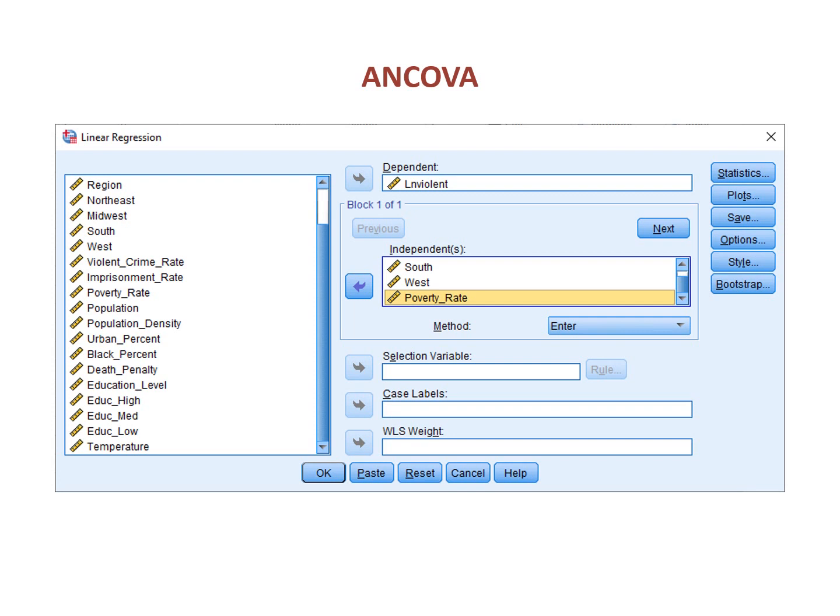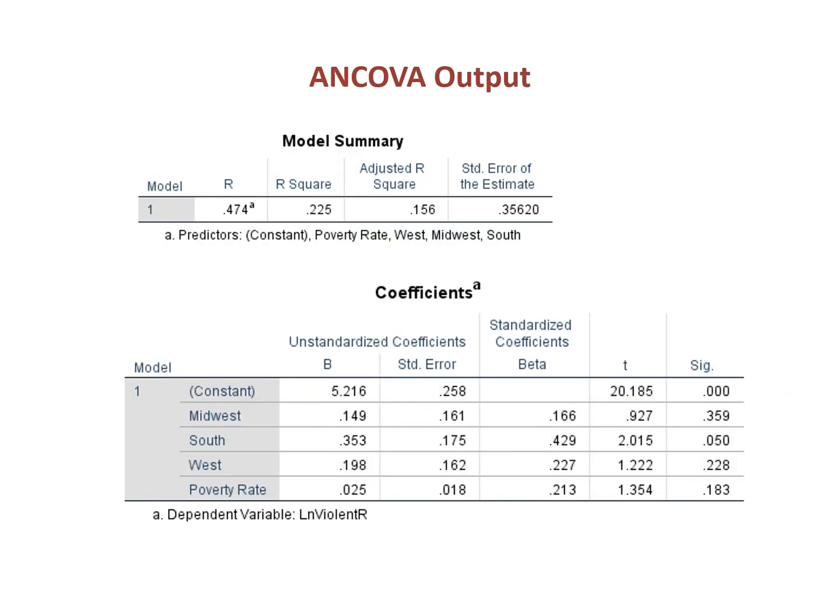Let's start with the regression procedure. Here we can run an ANCOVA model simply by listing both types of variables as independents in the command dialog box. We interpret the output by combining the techniques of the two different kinds of models. The constant combines the y-intercept and the mean of the reference category. The betas of a region measure the distance of each region from the reference category — they are not positive or negative; rather, their sign indicates whether they are above or below the mean of the reference category. The beta for poverty rate is interpreted as a slope.